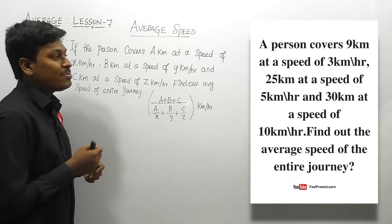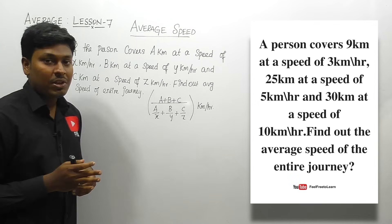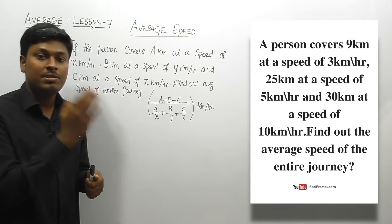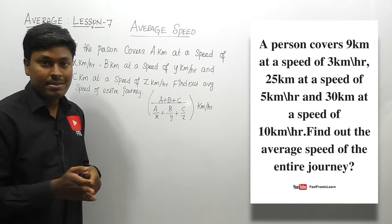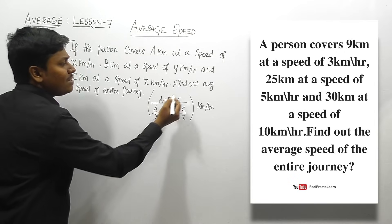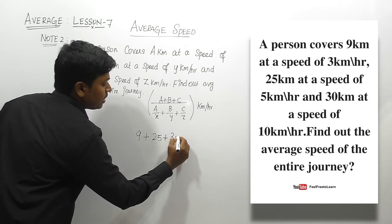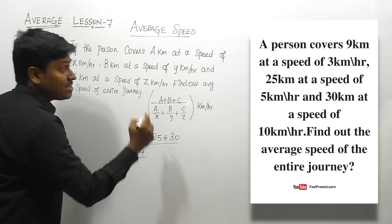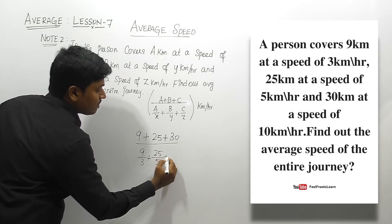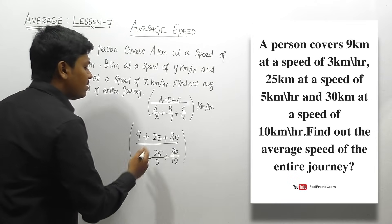Question three: a person covers 9 kilometers at 3 km/h, 25 kilometers at 5 km/h, and 30 kilometers at 10 km/h. Find the average speed. Since the distances are not the same, we use: (a + b + c) / (a/x + b/y + c/z). That gives us (9 + 25 + 30) divided by (9/3 + 25/5 + 30/10). Solving this expression gives the average speed for the entire journey.